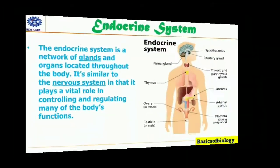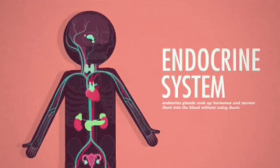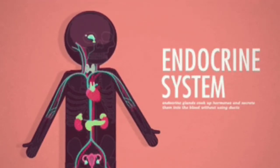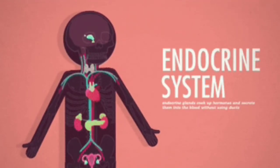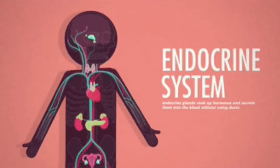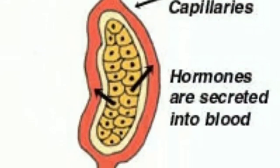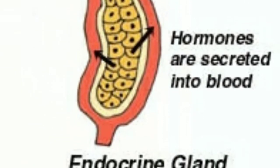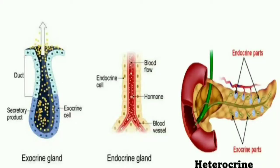We are discussing the endocrine system, which is a regulatory system of ductless glands that secrete chemical messengers called hormones. These hormones circulate within the body via the bloodstream to affect distant organs. Ductless glands are called endocrine glands, and they secrete hormones directly into the bloodstream for distribution throughout the body.